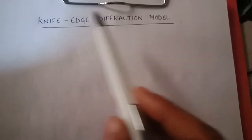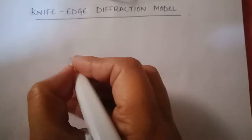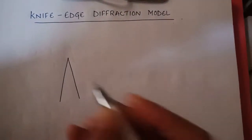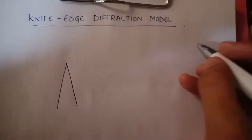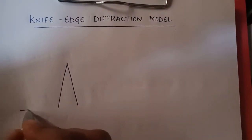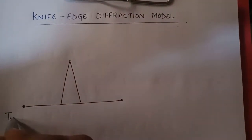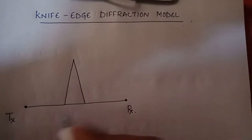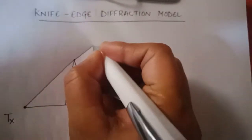After diffraction, we will study a model called the knife-edge diffraction model. We assume that the obstacle is knife-edged, so it is called the knife-edge model. We have three cases. The first case is when your obstacle height is greater than the height of your transmitter and receiver, where the transmitter and receiver height remains constant but the obstacle is greater.